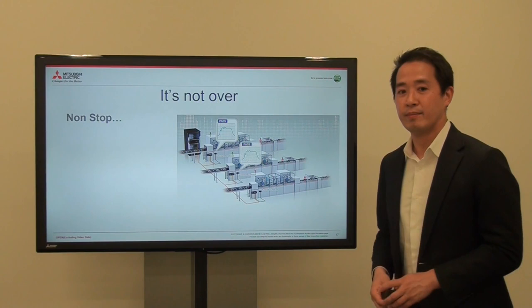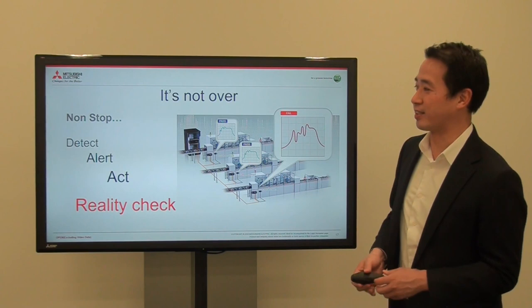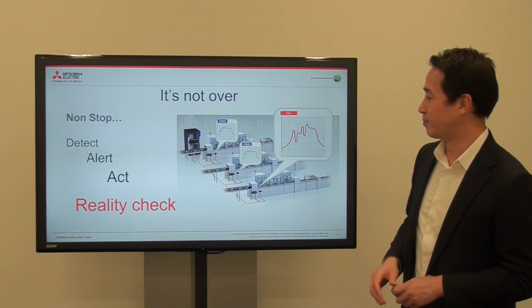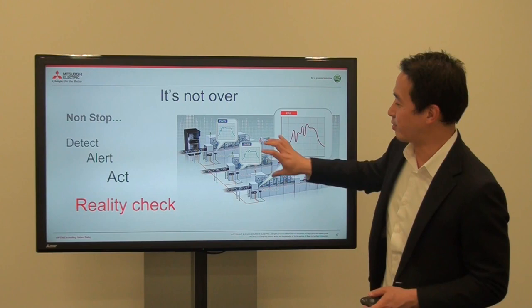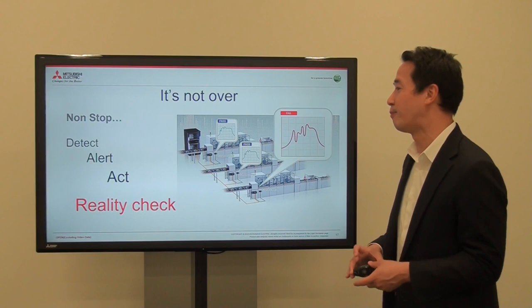Once it's finished and the predictive maintenance is working correctly, you have to remember it's not over. It works for one machine, but alerting alone is not enough — you should make the PLC program to stop the machine when that alert happens. You should also ask: can you pass this model on to other similar machines or production lines? Maybe you can copy it, but you should test again.